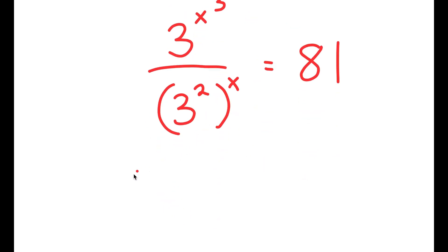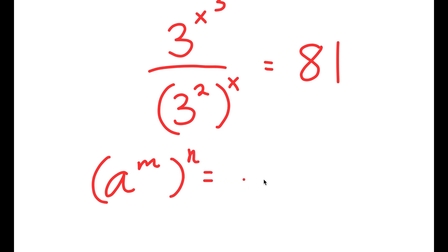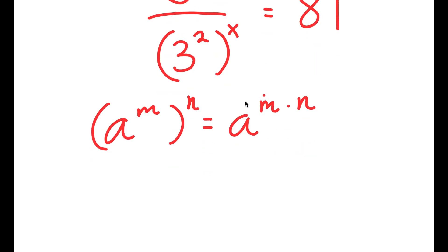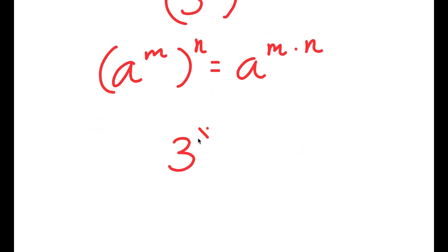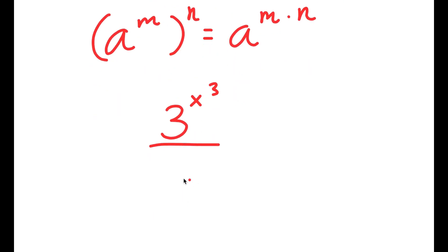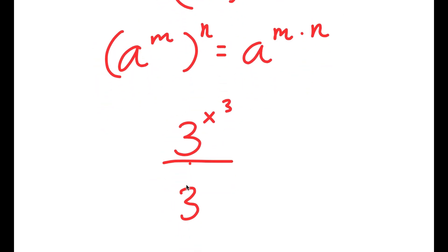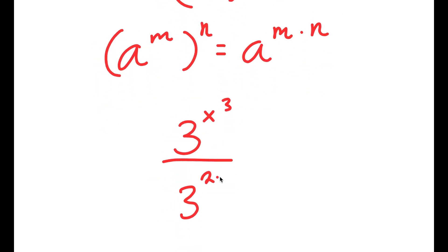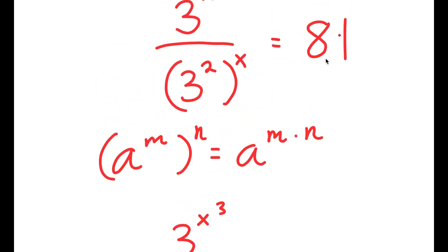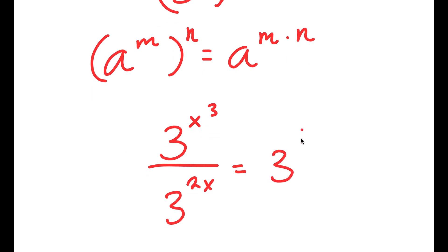If I have something in the form a to the power of m to the power of n, this is equal to a to the power of m times n. So 3 to the power of x to the power of 3 over 3 to the power of 2 times x — so 3 to the power of 2x — is equal to 81, which I'm going to rewrite as 3 to the power of 4.